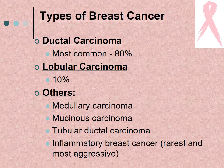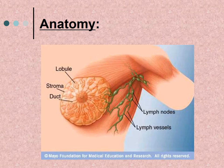There are different types of breast cancer. Ductal carcinoma is the most common, accounting for about 80% of cases. Lobular carcinoma accounts for about 10% of cases. Other types include medullary carcinoma, mucinous carcinoma, tubular ductal carcinoma, and inflammatory breast cancer — which is the rarest but most aggressive form.